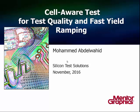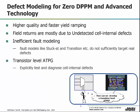In silicon test we use the term DPPM — it is the number of faulty chips that escaped manufacturing test per million chips. The cost of escaped faults is much higher and can put the whole business at risk.